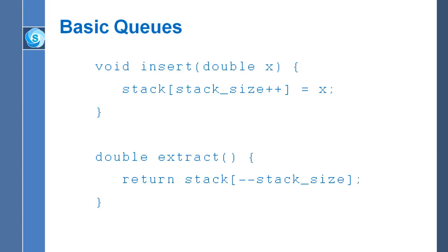You can enhance the extract function to check: if stack_size equals zero, throw an exception; else return stack[--stack_size]. Likewise, there's the danger of inserting too much data — you could wind up going beyond the end of the array. You could build in protection to prevent over-inserting into the stack.